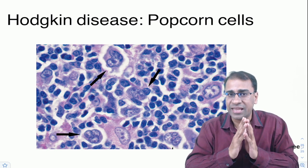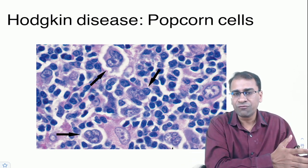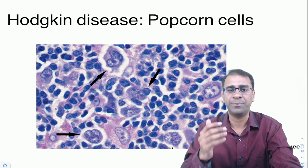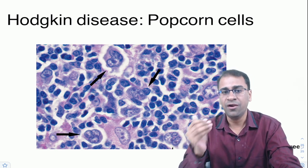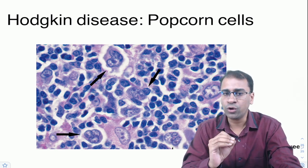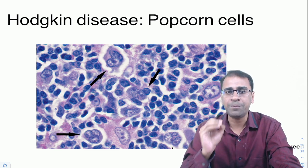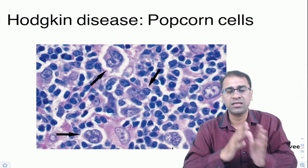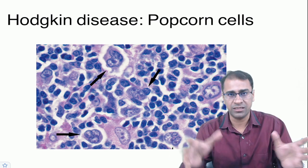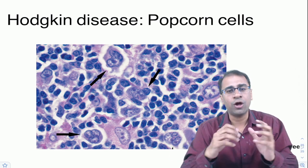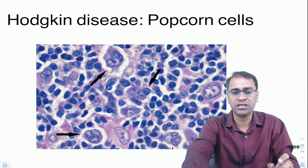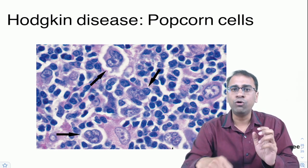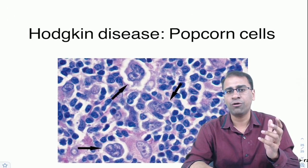The non-classical variety — NLPHL — is CD15 and CD30 negative but CD20 positive, and also positive for BCL6. Treatment for Hodgkin's lymphoma is the ABVD regimen: adriamycin (doxorubicin), bleomycin, vinblastine, and dacarbazine.